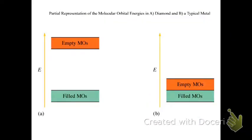So here we have the molecular orbital energies in diamond and a typical metal. You can see they're really far apart in diamond.